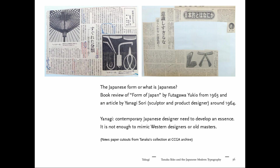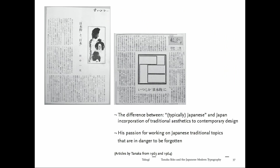I found newspaper cutouts at the archive proving that Tanaka was very interested in what others conceived as the Japanese style — what makes a Japanese design Japanese. Yanagi Sori also wrote on this, saying it is not good to mimic the old masters, but equally it leads nowhere to mimic Western styles — you need to find your own positioning. Early on, Tanaka started writing his own articles on that, noting that many people already described him as typically Japanese, though not always in a positive way.